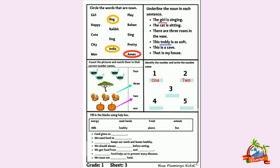Now see the second question: underline the noun in each sentence. Yehaa peh six sentences given hai. In sentences ko padhna hai aur samajna hai ki ismein koon sa noun hai, aur noun ko underline karna hai. The girl is singing — ladki gaana ga rahi hai. Ismei noun kia hai? Girl. So hum underline girl karein ge.